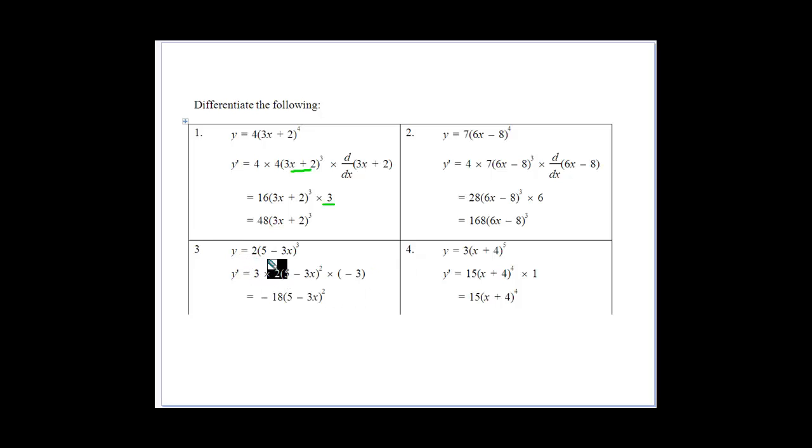y equals 2(5x - 3) to the power of 3. Again, bring your 3 down, multiply by the 2, subtract 1 from the power. Multiply by the derivative of (5x - 3), which gives you -3. Then -3 times 3 times 2 gives us -18.